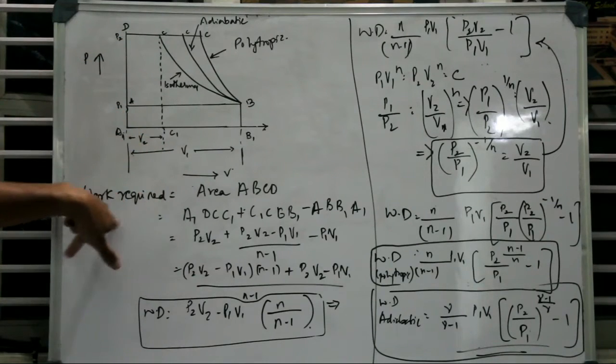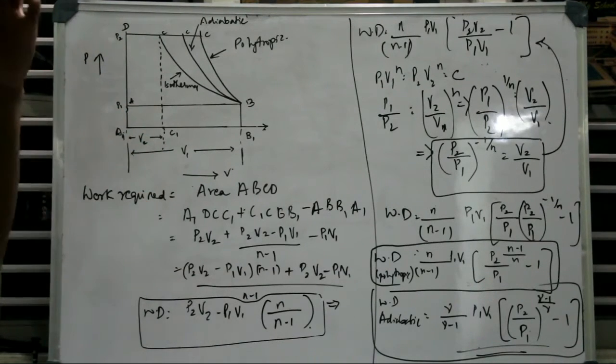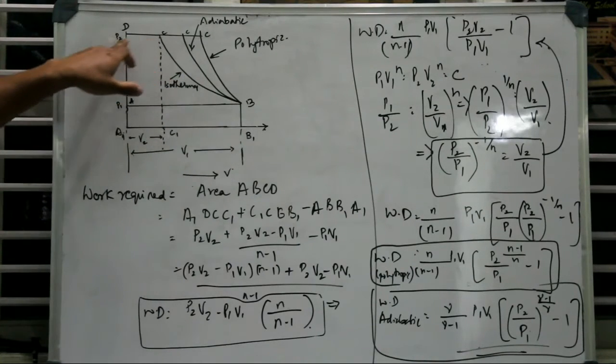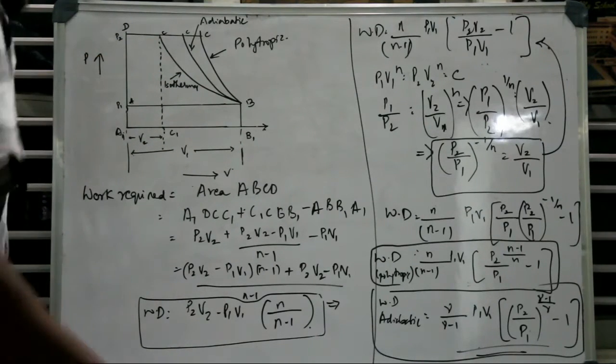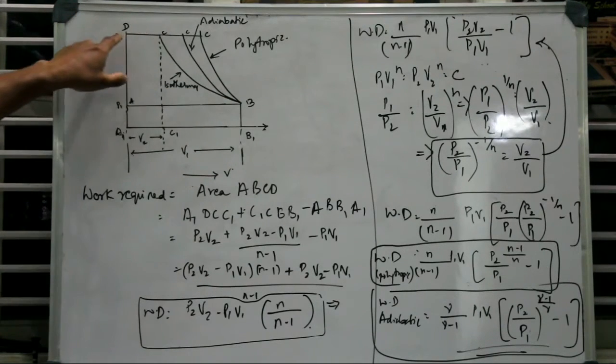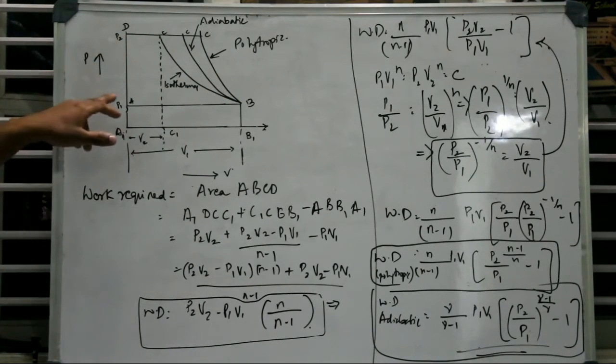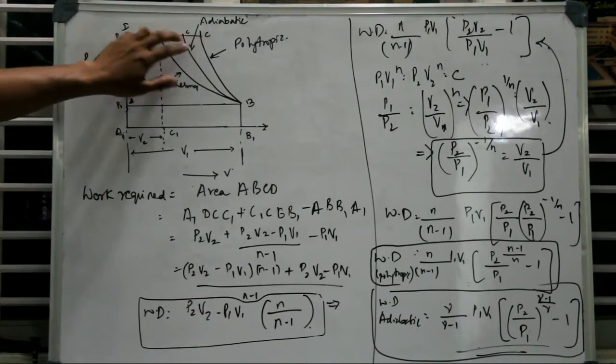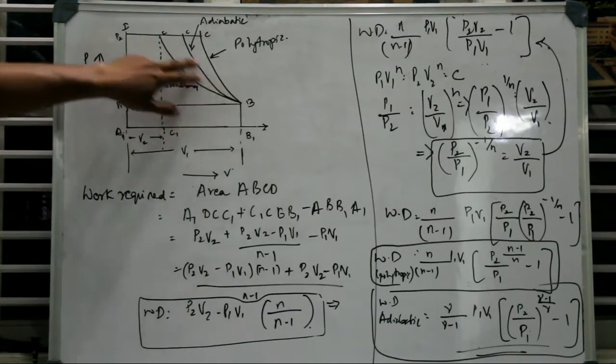For this, the work required is given by the area under the curve A, B, C, and D. First, to find out this area ABCD, we will take the polytrophic process. Neglect these two curves, they are not there for the first case.